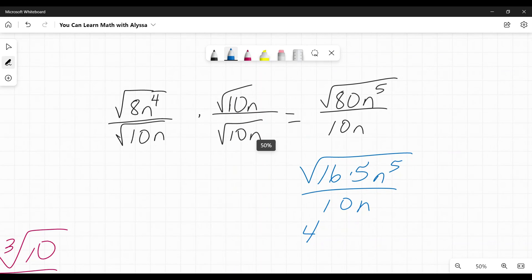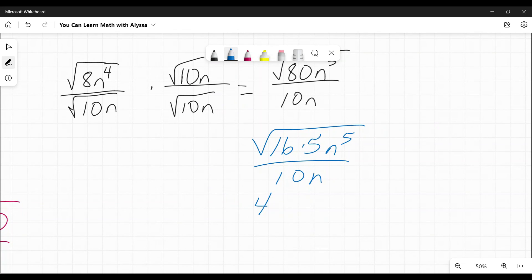And N to the fifth, when we're doing these square roots of variables, we divide by the root. The quotient that we get comes out. The remainder is left inside. By what I mean, what I mean by that is that N to the fifth, we divide by two, because this is a square root. Five divided by two is two remainder one. So it comes out as N to the power of two. N to the power of one stays in and that five stays in. And we still have that 10N on the bottom.